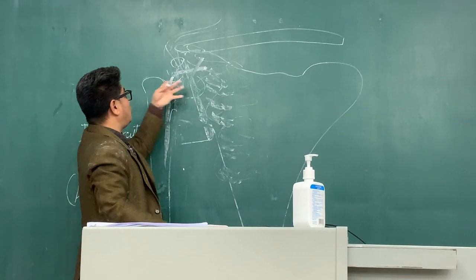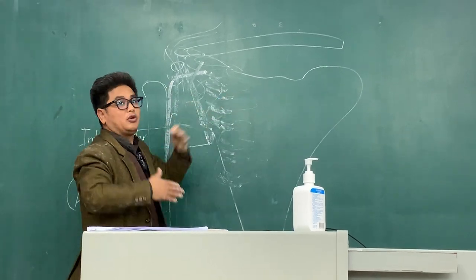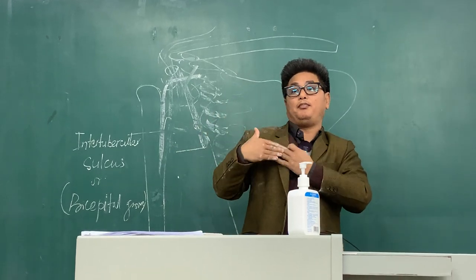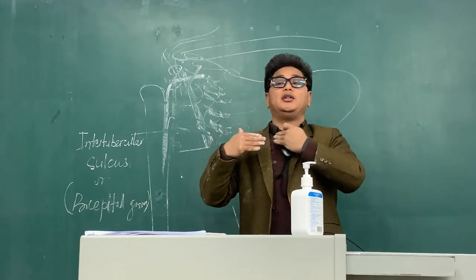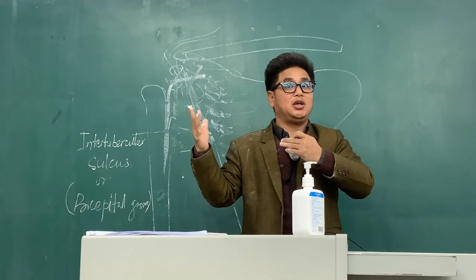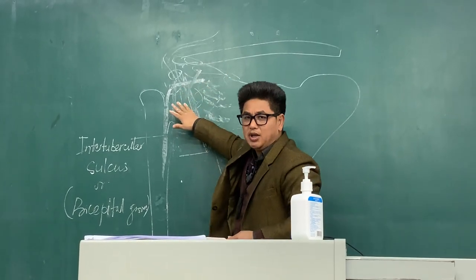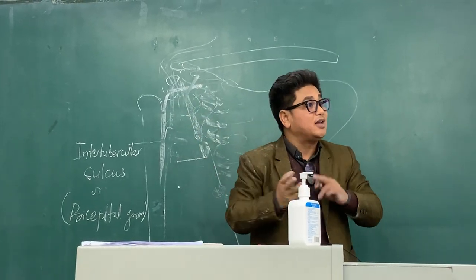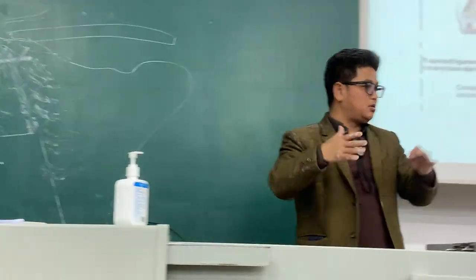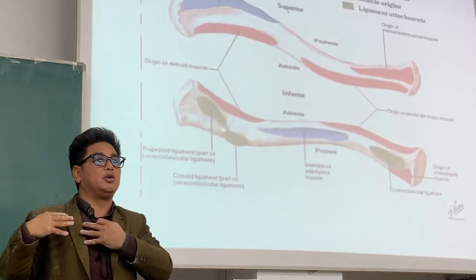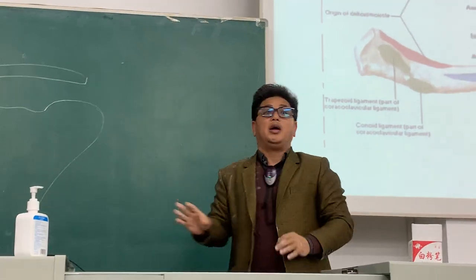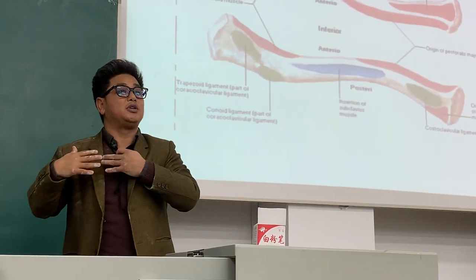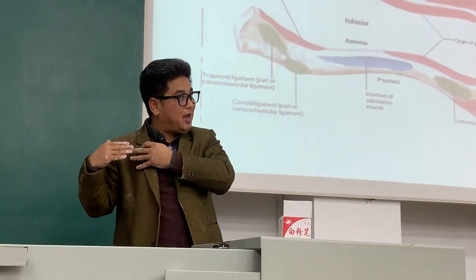Then the anterior wall is formed of pectoralis major muscle. Anteriorly there comes the pectoralis major muscle, pectoralis minor muscle, then subclavius muscle — three muscles are here. There is also the clavipectoral fascia, which is covering the anterior region. So clavipectoral fascia, pectoralis minor muscle, and subclavius muscles are forming the anterior wall of the axilla.